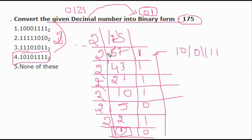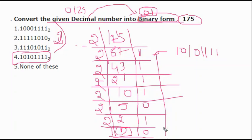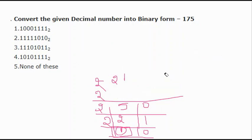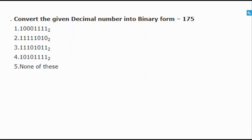This ladder method should be clear. Write the number, put the lines, divide by 2. Keep dividing until you reach the least number, then start writing from the least number and go upward. If you go in the downward format, your answer will be wrong. Always go in the upward format — keep this in mind so you won't get confused.